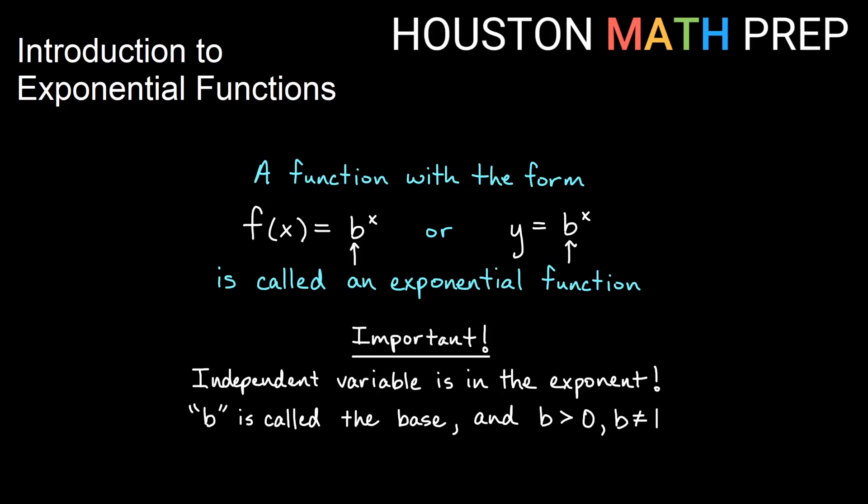Our b here is called the base. b needs to be a positive number and our base also needs to be a number that is really not equal to 1. We don't want that either. So some positive number that isn't 1 is going to be our base. Let's figure out why this is true.